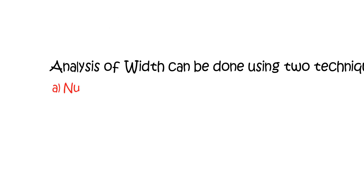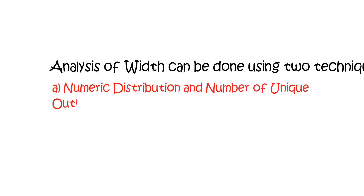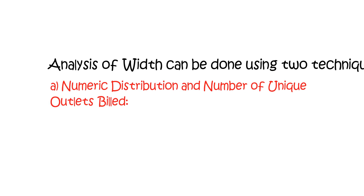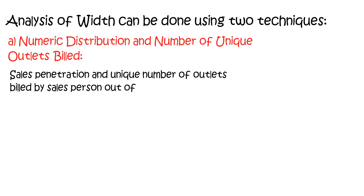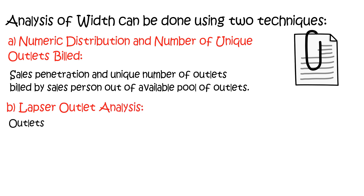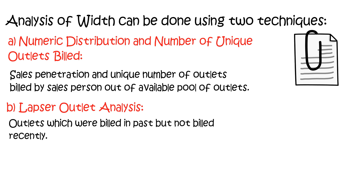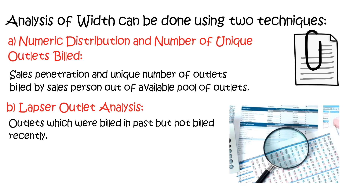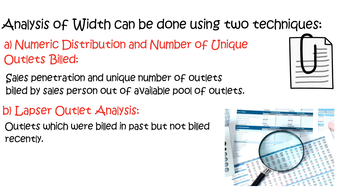Analysis of width can be done using two techniques. Firstly, numeric distribution and number of unique outlets billed — in this analysis we analyze sales penetration and the unique number of outlets billed by a salesperson out of the available pool of outlets. Secondly, lapsed outlet analysis — here we analyze outlets which were billed in the past but not billed recently. These outlets are like low-hanging fruit and can be easily convinced to resume sales.